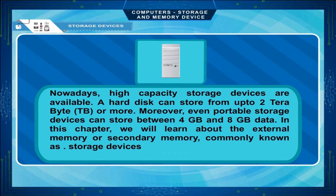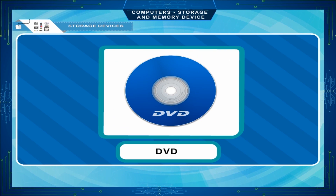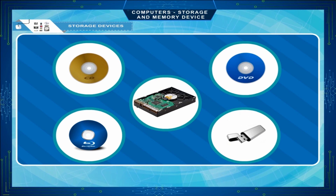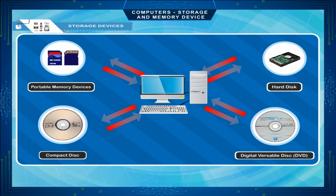Nowadays, high-capacity storage devices are available. A hard disk can store up to 2 TB or more. Even portable storage devices can store between 4 GB and 8 GB of data. Secondary memory devices include hard disk, pen drive, CD, DVD, and Blu-ray disk. Storage devices provide a location where data can be stored when it is not being processed. A computer can read and input data from storage devices for further processing and store processed information onto these devices again and again.